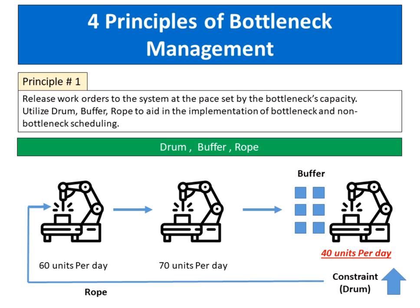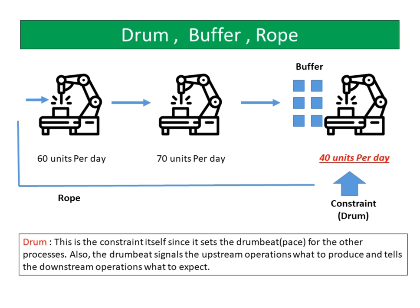We present four principles of bottleneck management. Principle number one: release work orders to the system at the pace set by the bottleneck's capacity. The theory of constraints utilizes the concept of drum, buffer, rope to aid in the implementation of bottleneck and non-bottleneck scheduling. Drum-buffer-rope (DBR) is a method of synchronizing production to the constraint while minimizing inventory and work in process. The drum is the constraint itself, since it sets the drumbeat pace for the other processes.